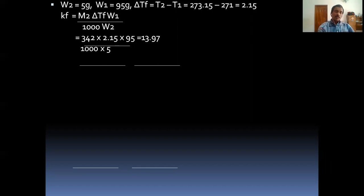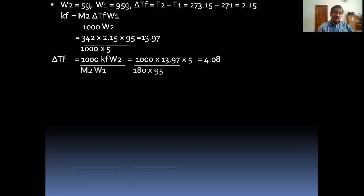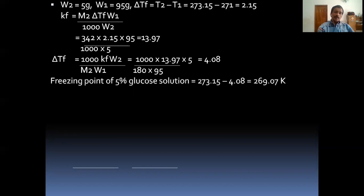For 5% glucose solution: W₂ = 5 g, W₁ = 95 g, molecular mass of glucose = 180 g/mol, K_f = 13.97. ΔT_f = (1000 × K_f × W₂) / (M₂ × W₁) = (1000 × 13.97 × 5) / (180 × 95) = 4.08 K. Freezing point of 5% glucose solution = 273.15 − 4.08 = 269.07 K.